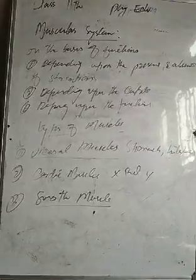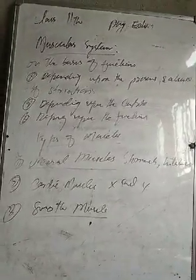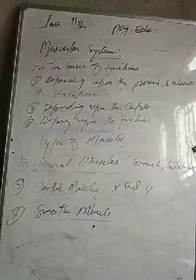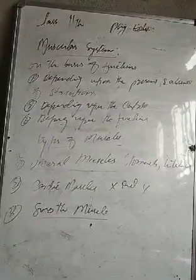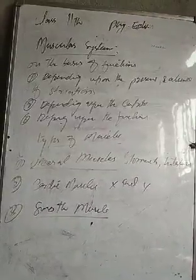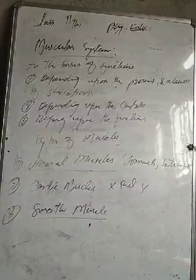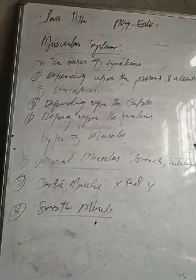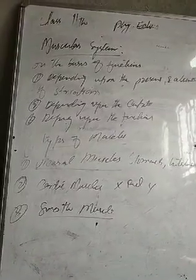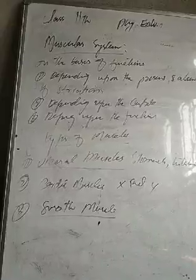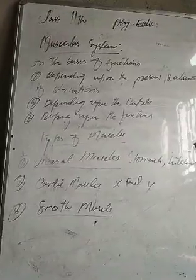If we talk about the muscles, we will talk about the functions they perform in our body in day-to-day life activity. On the basis of functions, there are 3 types of muscles. Number 1 is depending upon the presence or absence of striations. Number 2 is depending upon the control of the muscle, and number 3 depending upon the function of the muscle.